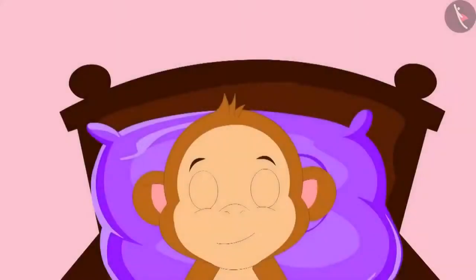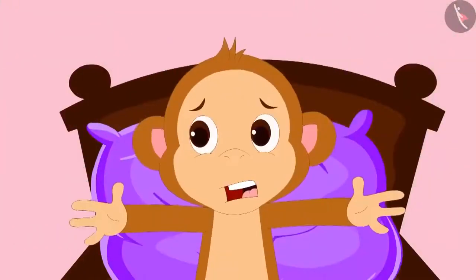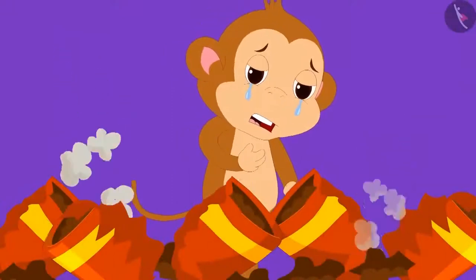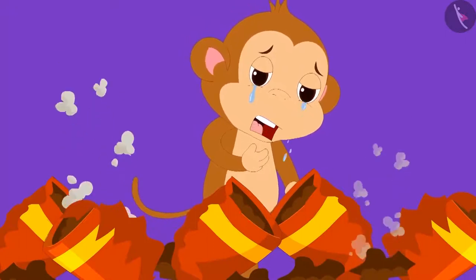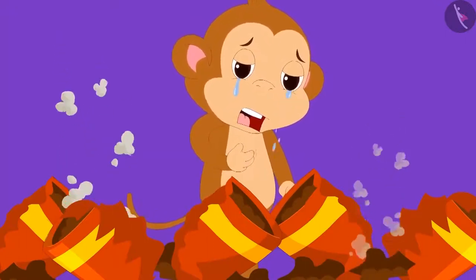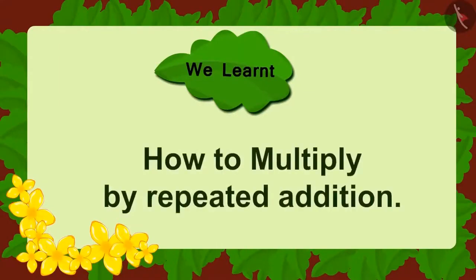After planting the seeds, Babban was dreaming of golden apples at night. Suddenly, he heard a blast. When Babban went out to check, all his pots had broken. Once again, Babban became a victim of greed. Children, in this lesson we learnt how to multiply by adding repeatedly. In the next two lessons, we will see some more interesting examples.